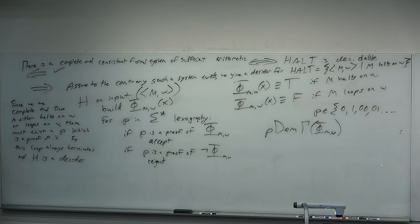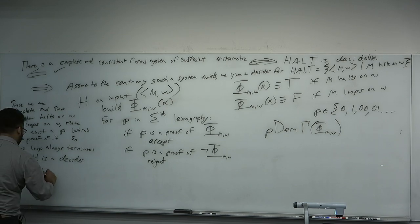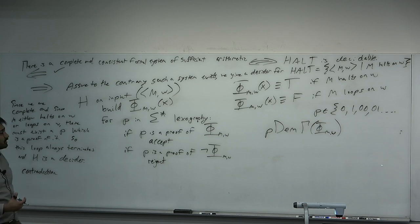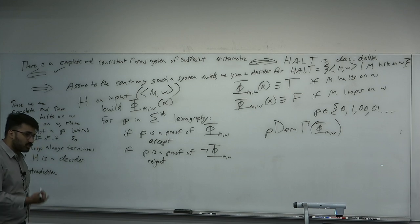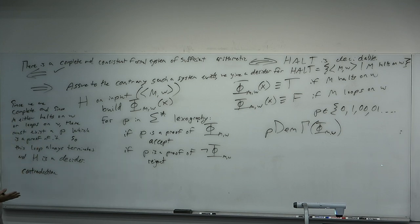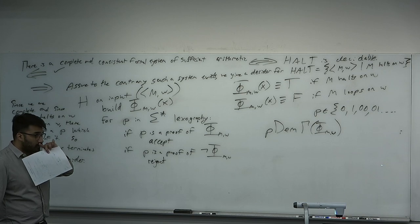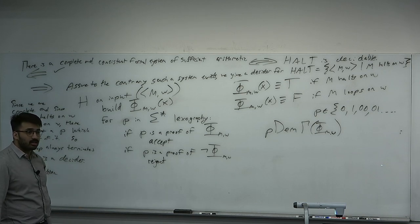This is in fact a proof of Gödel incompleteness. We assumed to the contrary we are in a system with sufficient arithmetic, complete and consistent. But if such a system were to exist, we would be able to give an algorithm for HALT — contradiction, no such algorithm for HALT can exist. It elucidates less than the proof Gödel gave, but it's much shorter and simpler, simply relying on the undecidability of the halting problem.